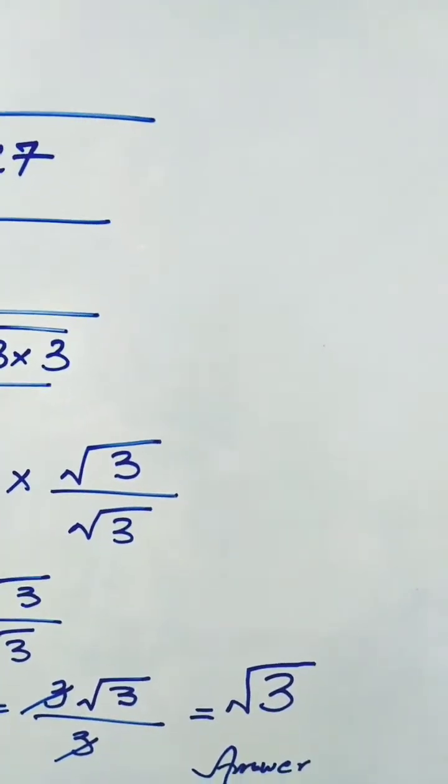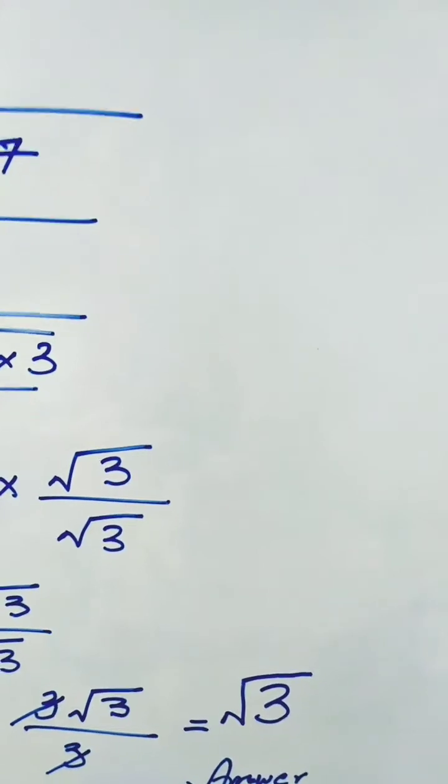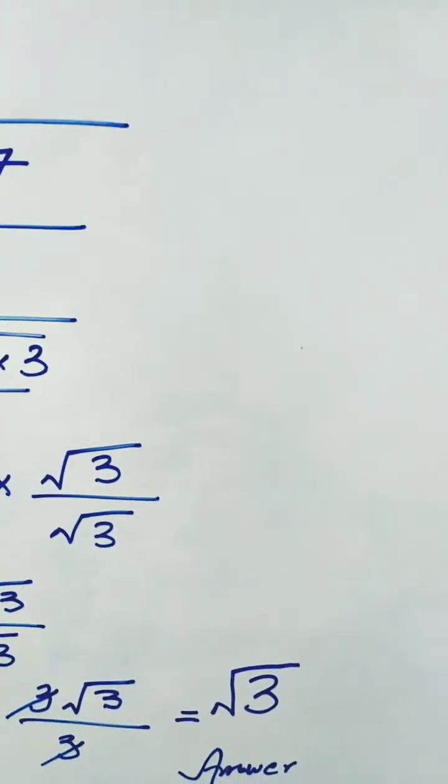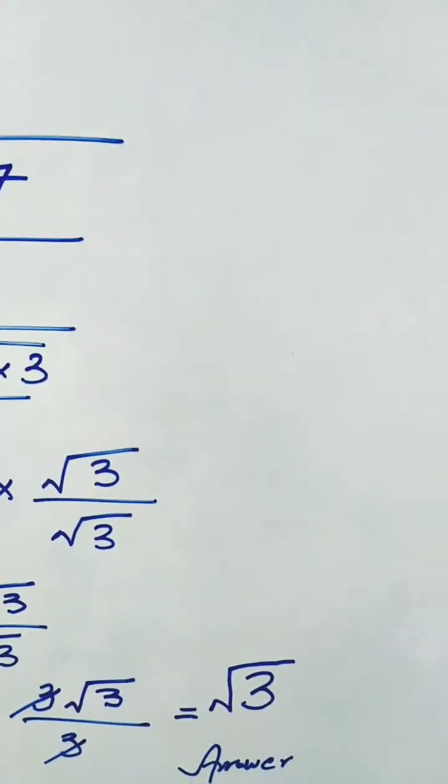The 3s cancel out and root 3 is the answer, which is the required form n√3. Here n is equal to 1, so we simply write root 3 as the answer.